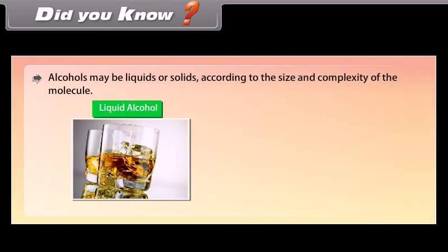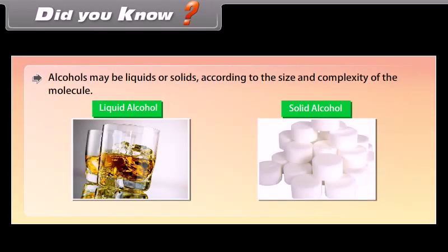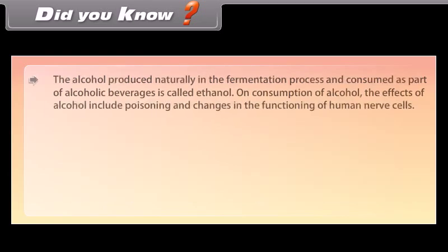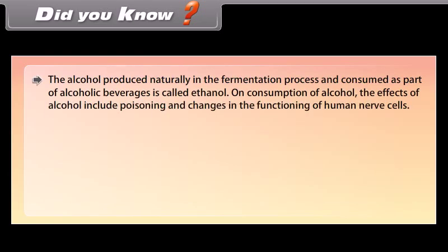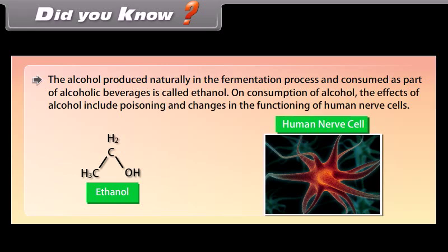Solubility: alcohols and phenols are generally soluble in water because both form hydrogen bonds with water molecules. Alcohols may be liquids or solids according to the size and complexity of the molecule. The alcohol produced naturally in the fermentation process and consumed as part of alcoholic beverages is called ethanol. On consumption of alcohol, effects include poisoning and changes in the functioning of human nerve cells.